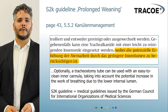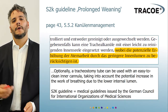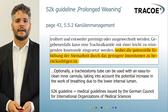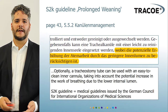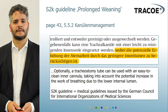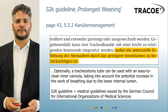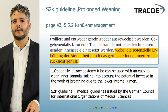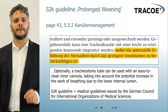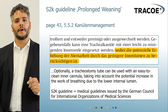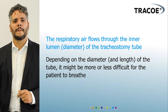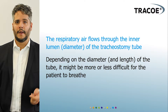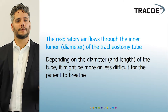There are many guidelines when dealing with tracheostomy tubes. The S2K guideline, issued by the German Council for International Organizations of Medical Sciences, states that optionally a tracheostomy tube can be used with an easy-to-clean inner cannula, but taking into account the potential increase in the work of breathing due to the lower internal lumen. This is important since, depending on the diameter and length of the tube, it can be more or less difficult for the patient to breathe.